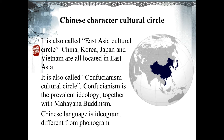The Chinese character cultural circle is also called East Asia Cultural Circle. On the map, China, Korea, Japan and Vietnam are all located in East Asia. The Chinese character cultural circle is also known as Confucianism cultural circle because Confucianism is the prevalent ideology in the circle, together with Mahayana Buddhism, the big vehicle Buddhism.